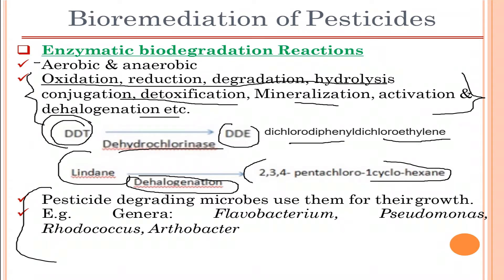Some pesticide-degrading microbes use these enzymes for their own growth. Examples of pesticide-degrading microbes include Flavobacterium, Pseudomonas, Rhodococcus, and Arthrobacter. These microbes degrade pesticides into smaller, useful compounds and utilize them for their own growth.